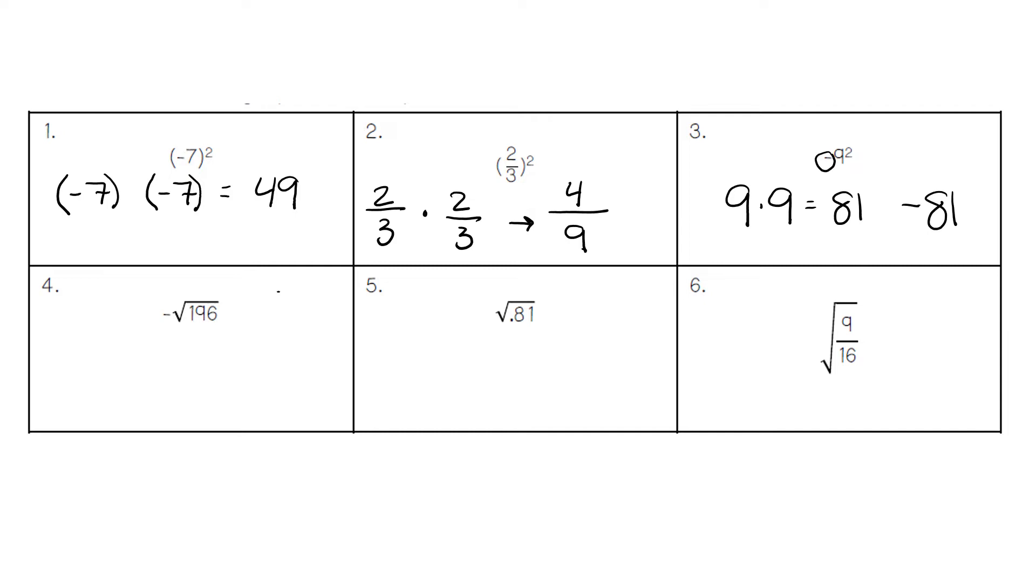For number four, we have the negative square root of 196. The square root of 196 is 14, because 14 times 14 equals 196. Then we bring down the negative sign from the problem, giving us negative 14.